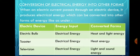Electric current is also called electrical energy. As you know, energy can never be created nor destroyed — it can only transfer from one form to another. Similarly, when electric current passes through an electric device, it produces electrical energy which can be further converted into other forms of energy. In this table, there are three examples showing how electrical energy is converted into other forms through electrical devices.